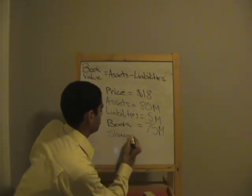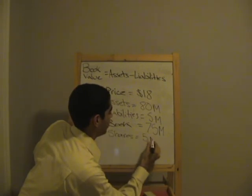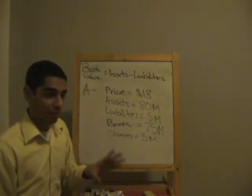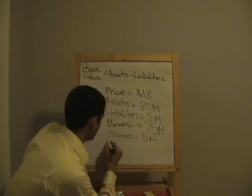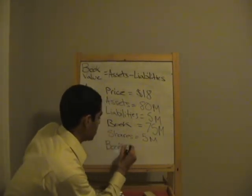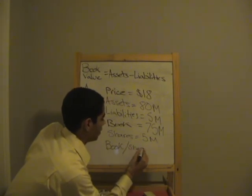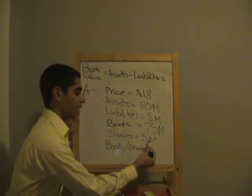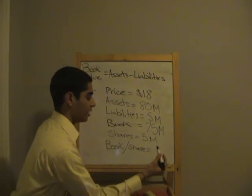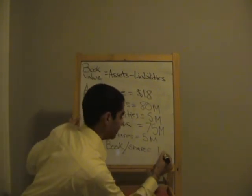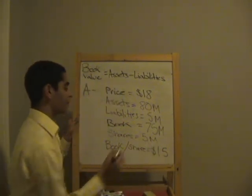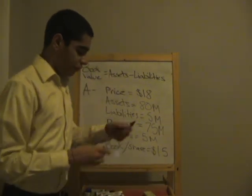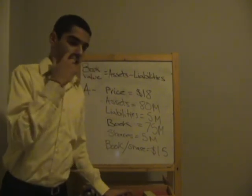Let's say this company has 5 million shares. To find the book value per share, all we do is take the book value divided by the number of shares. 75 million divided by 5 million gives us $15. So the book value per share is $15.